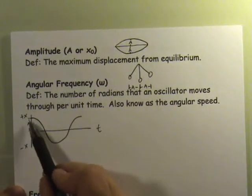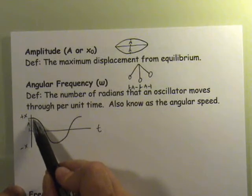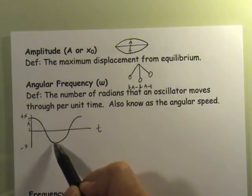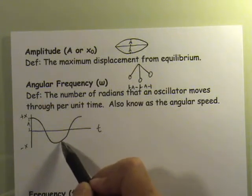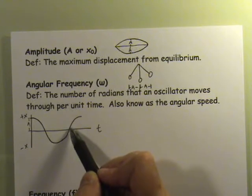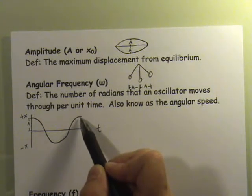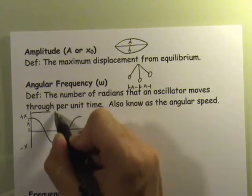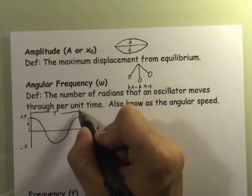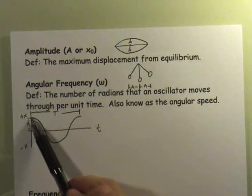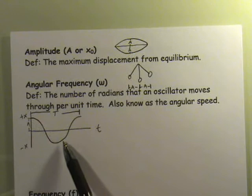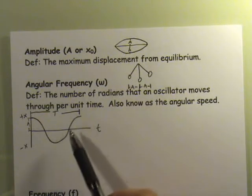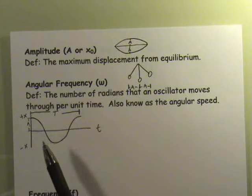As you release the oscillator, the displacement decreases as the restoring force pulls it back towards equilibrium. It overshoots the equilibrium position, the restoring force brings it to a stop, then pulls it back where it overshoots once again, and the restoring force brings it to a stop on the other extreme. The period of time it takes to go from maximum amplitude all the way over to the other side and back to the same maximum displacement — that's referred to as the period.